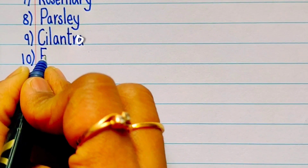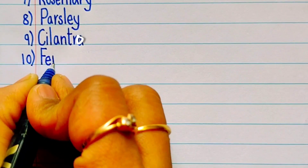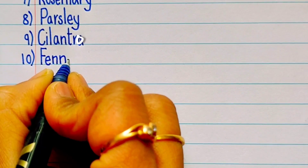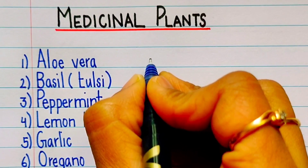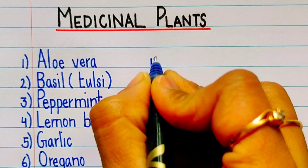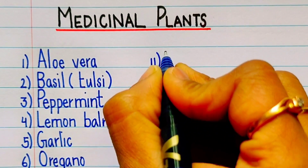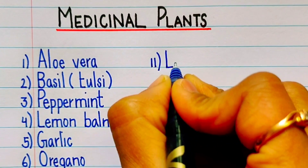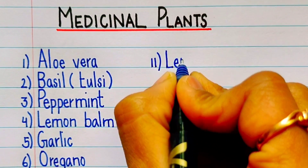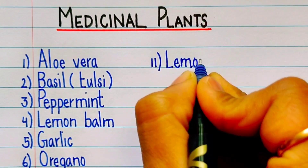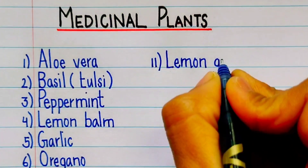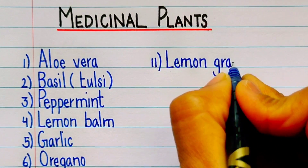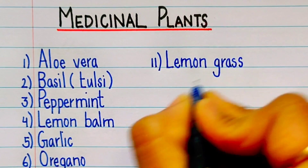Tenth one is fennel, F-E-N-N-E-L. Eleventh one is lemongrass, L-E-M-O-N-G-R-A-S-S, lemongrass.